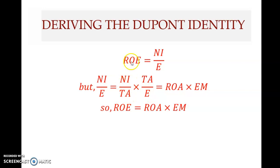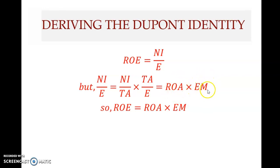So ROE, which is a profitability ratio, when expanded, gives us two other ratios: ROA, also a profitability ratio, and the equity multiplier, which is a leverage ratio. Therefore ROE equals ROA multiplied by the equity multiplier.